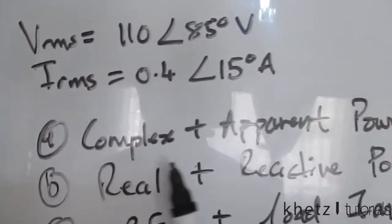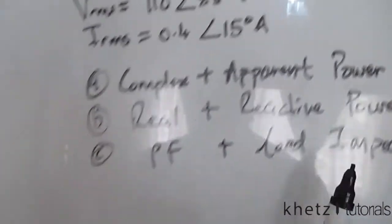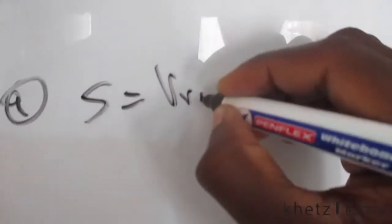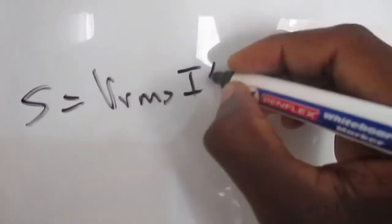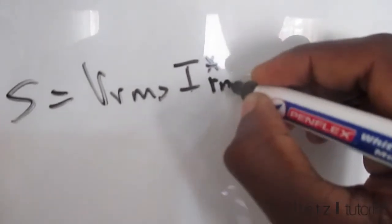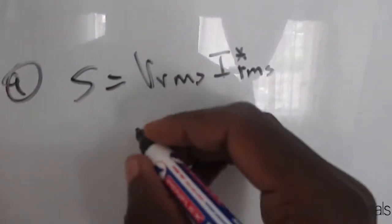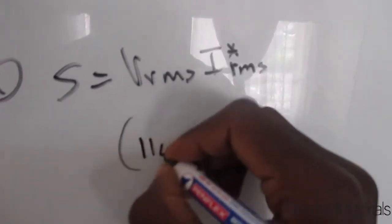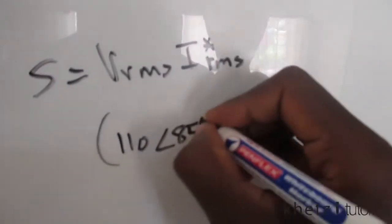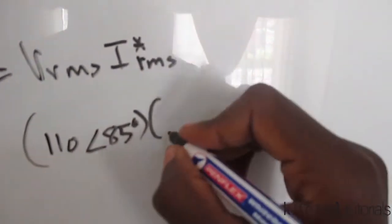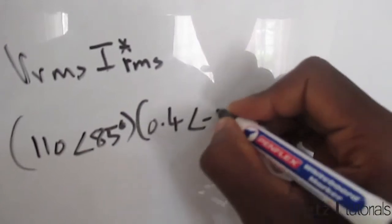So let's do that. The complex power is V_rms multiplied by the conjugate of I_rms. So doing that, we're going to substitute our values and say 110, which is V_rms, and I_rms - the conjugate of that would be negative.